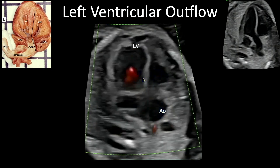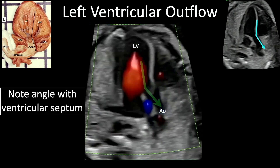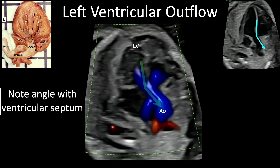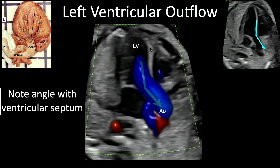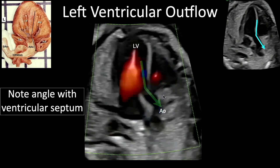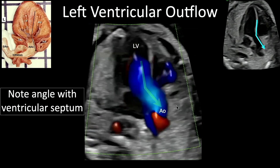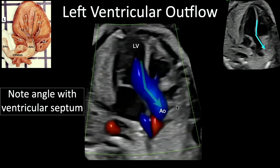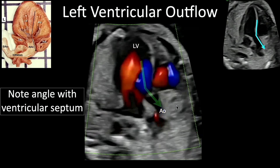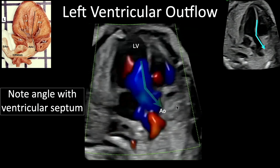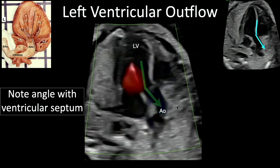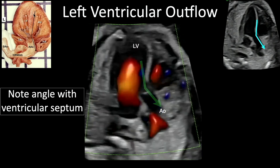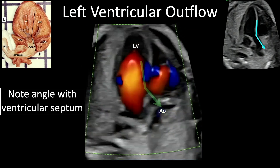If you look at how the ascending aorta comes out, it makes a slight angle with the ventricular septum as it exits the left ventricle. This is an important anatomic feature, and you can see it here on the autopsy specimen as well — the slight angle that the LVOT makes with the left ventricle.